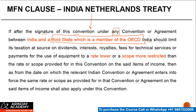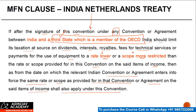Should India limit its taxation at source on dividend, interest, royalty, FTS, or payment for the use of equipment to a rate lower or a scope more restricted. So in respect of any of these payments, if India enters into a treaty with a third state which is a member of OECD, where the rate of tax is lower or the scope of taxation is limited in India's favor, then the rate or scope provided for in this convention on the said item of income — then as from the date on which the relevant Indian convention or agreement enters into force with the third state — the same rate or scope as provided for in that convention or agreement on the said item of income shall also apply under this convention.